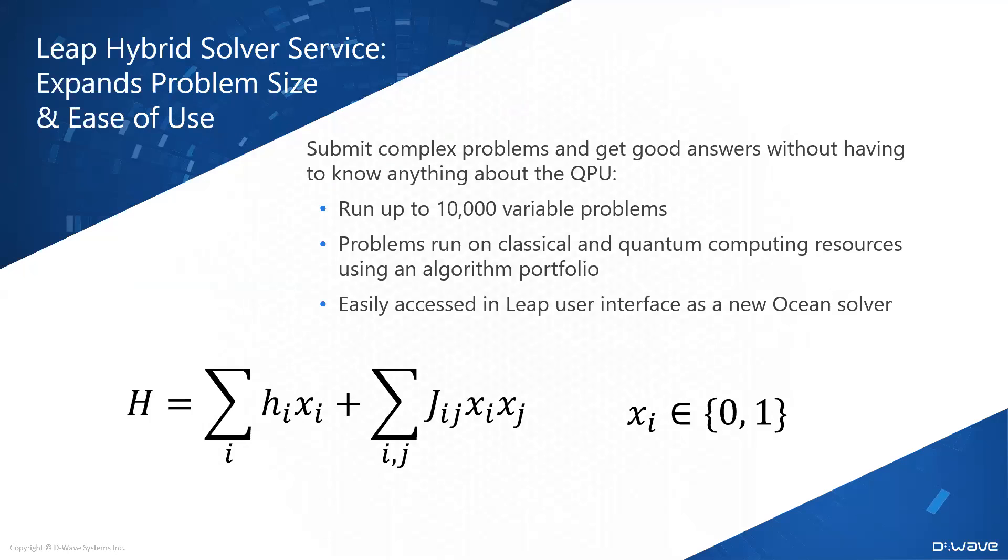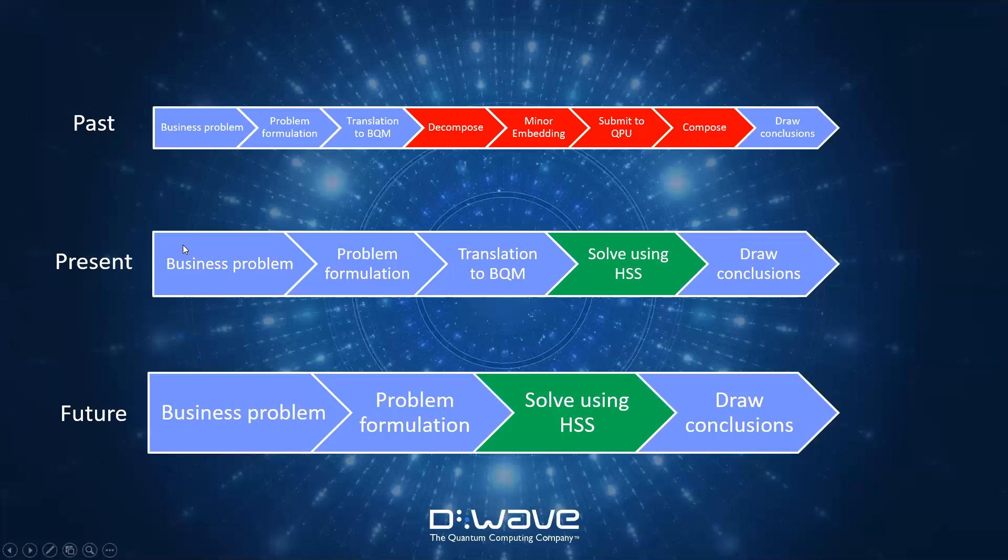Probably the most interesting part of Leap 2, at least for me, is the hybrid sampling service. It provides an API to a solver that accepts up to 10,000 variables with arbitrary connectivity. A portfolio of solvers use classical and quantum resources to solve complex problems. The type of problems that you can currently solve using the API is called quadratic unconstrained binary optimization, which is, you can think of it as an energy function or an objective function over binary variables with linear and quadratic terms. And the goal is to find a set of binary variables or string of binary variables, xi, such that the energy or the Hamiltonian or the objective function is minimized. This is a hard optimization problem and it's been shown that you can map a lot of NP-hard and NP-complete problems to the optimization of an Ising Hamiltonian.